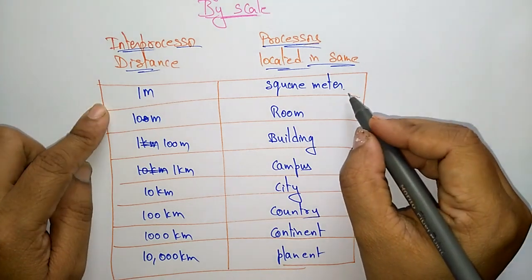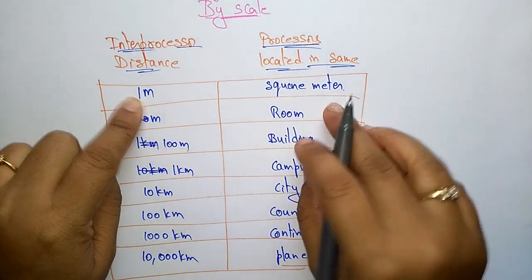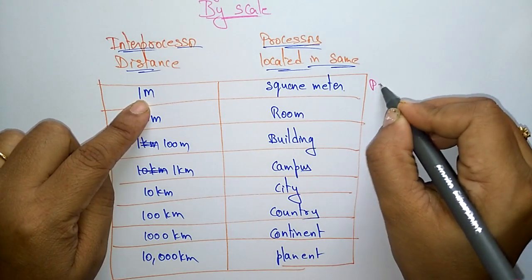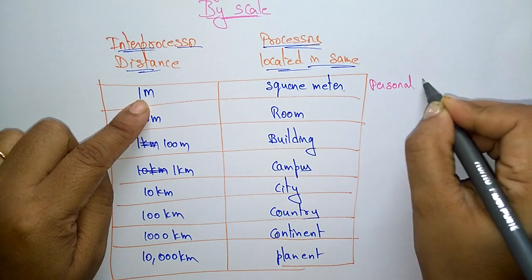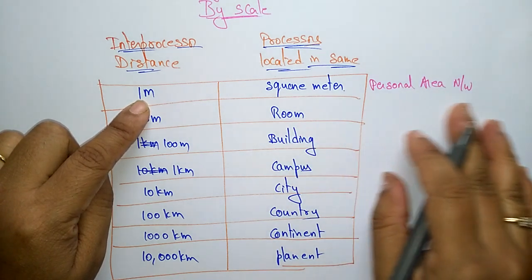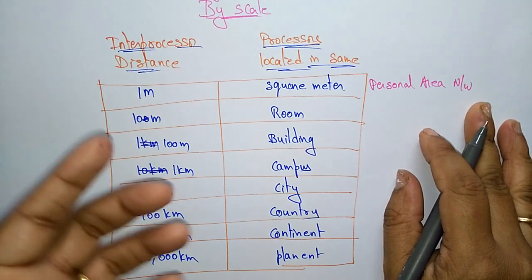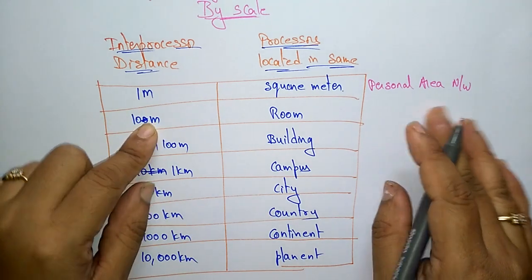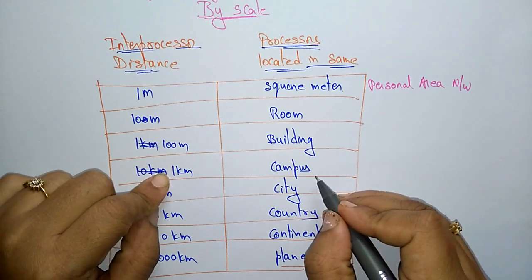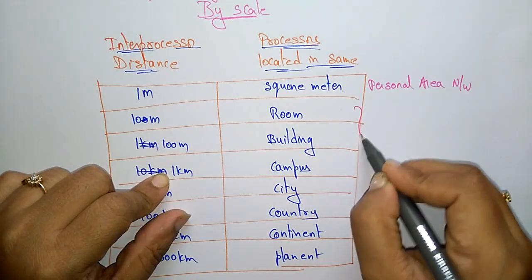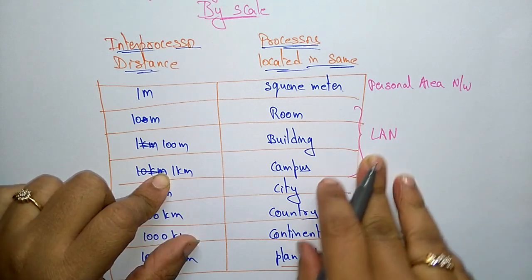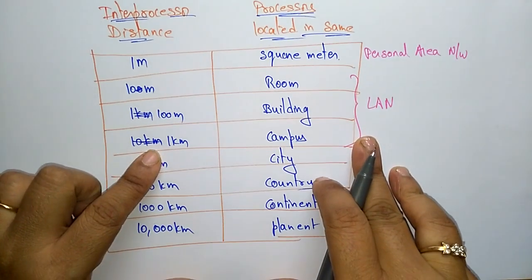So, if the inter-processor distance is 1 meter — square meters — you can go for personal laptops, that is the Personal Area Network (PAN). For 10 meters (room), 100 meters (building), and 1 kilometer (campus), the communication we use is the Local Area Network (LAN).